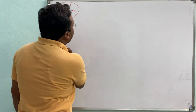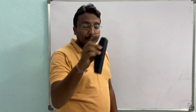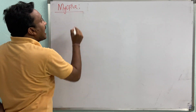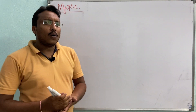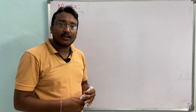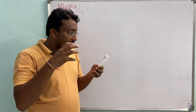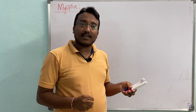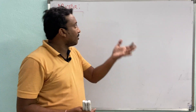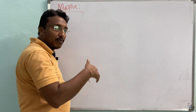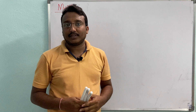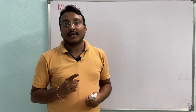Let us start with myopia. Myopia is an eye defect where a person can see objects that are near to the eye very clearly, but objects that are far away appear blurry. The person suffering with myopia can see objects closer to the eye clearly, but cannot see a clear image of far objects.